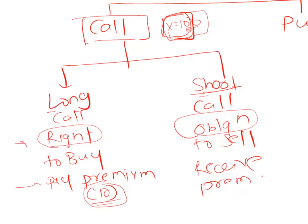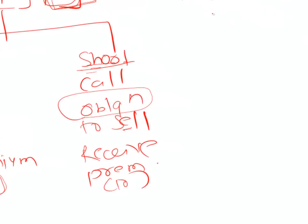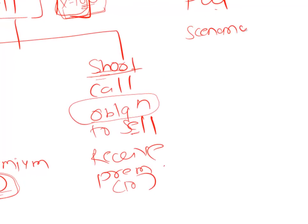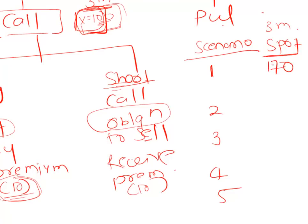How premium is calculated we will cover later; for now simply assume premium is 10. By paying 10 rupees to the short, the short has undertaken the obligation to sell this asset at 100, and the long has purchased the right to buy this asset at 100 at a future date — say 3 months. We will consider five scenarios: spot price at 3 months turns out to be 170, 130, 100, 40, and 0.